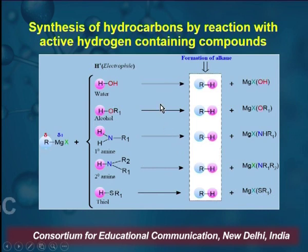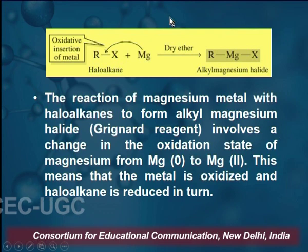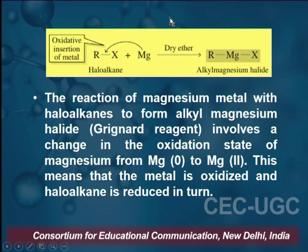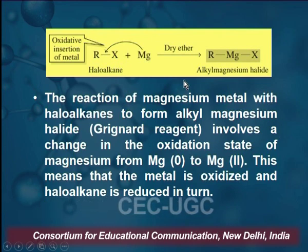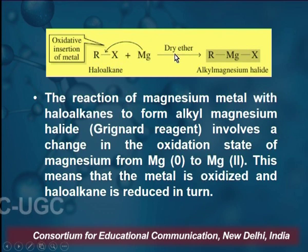This also indicates why, while preparing the Grignard Reagent, it should be under anhydrous conditions — that is, dehydration. As seen earlier, the Grignard Reagent reaction is done in the presence of dry ether. If moisture is present, Grignard Reagent will be immediately converted into the corresponding alkane. So it has to be kept under dry, anhydrous conditions.